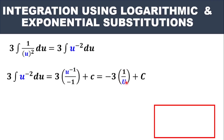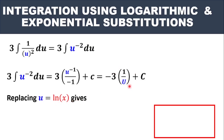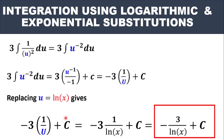We haven't finished yet — in the original question there was no U. We introduced U to represent ln x. So wherever we see U, we replace it with ln x. The final answer is −3 over ln x plus C. You can see how easy it is to do integration using substitution.